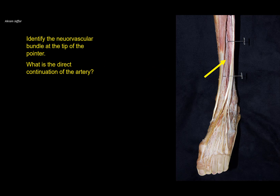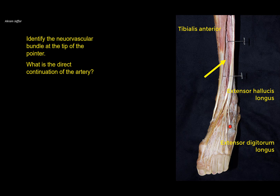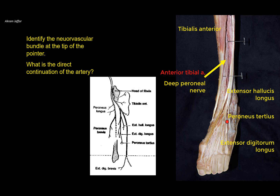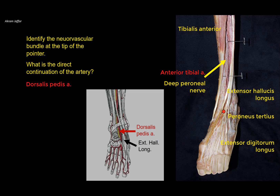Identify the neurovascular bundle at the tip of the pointer. This is a dissection of the front of the leg — the lateral side, and here is the medial subcutaneous surface of the tibia. I can see tibialis anterior, extensor hallucis longus, extensor digitorum longus with its four tendons, and peroneus tertius. In between these muscles, in front of the interosseous membrane, the neurovascular bundle is formed by the anterior tibial artery and the deep peroneal nerve. The deep peroneal nerve supplies these four muscles as well as extensor digitorum brevis, and the anterior tibial artery continues forward as the dorsalis pedis artery on the dorsum of the foot.